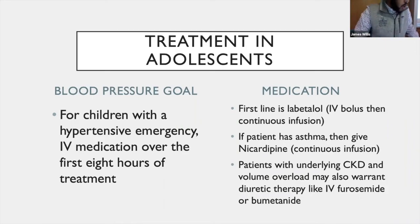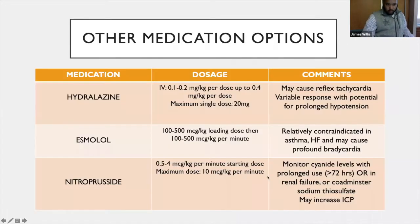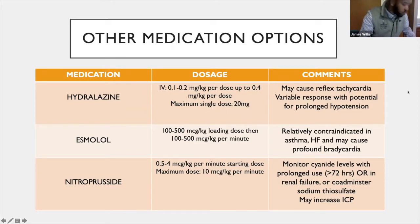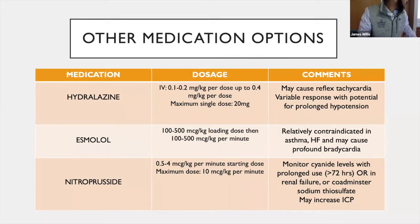Patients with underlying chronic kidney disease or fluid overload may warrant diuretic therapy such as IV furosemide or bumetanide. Other medication options that are less commonly used due to adverse effects include hydralazine — a direct arterial smooth muscle vasodilator. Its onset of action is slower than nicardipine or labetalol, and its duration is quite long, so you may overshoot and cause hypotension with potential for target organ ischemia. It can also cause reflex tachycardia.